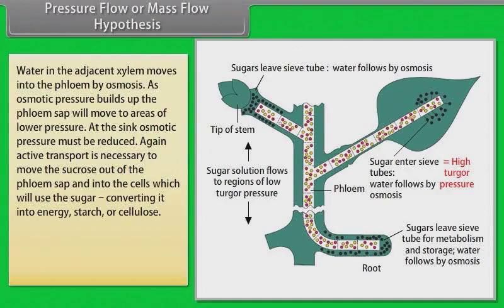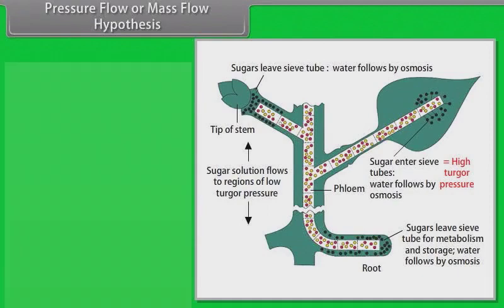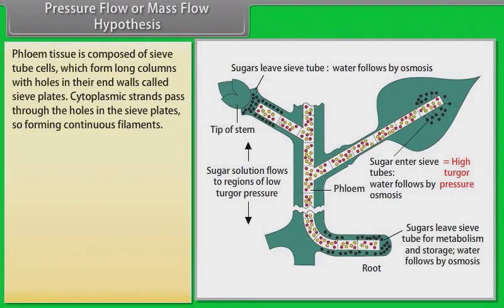At the sink, osmotic pressure must be reduced. Active transport is necessary to move the sucrose out of the phloem sap and into the cells which will use the sugar, converting it into energy, starch, or cellulose. As sugars are removed, the osmotic pressure decreases and water moves out of the phloem. Phloem tissue is composed of sieve tube cells which form long columns with holes in their end walls called sieve plates. Cytoplasmic strands pass through the holes in the sieve plates, forming continuous filaments.